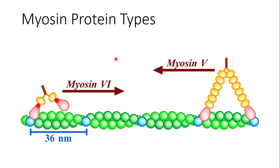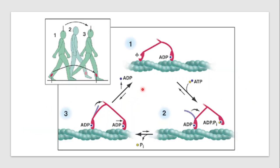Myosin is always walking on the actin. Myosin 5 moves in the negative direction and myosin 6 moves in the forward direction. Myosin follows the same procedure as kinesins and dyneins.